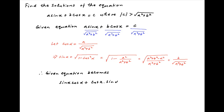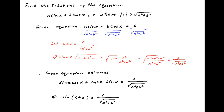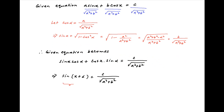This equals c upon √(a² + b²). The left-hand side is equal to sin(x + α), and the right-hand side is c upon √(a² + b²). Notice that the left-hand side, which is the sine of an angle, is always less than or equal to 1.